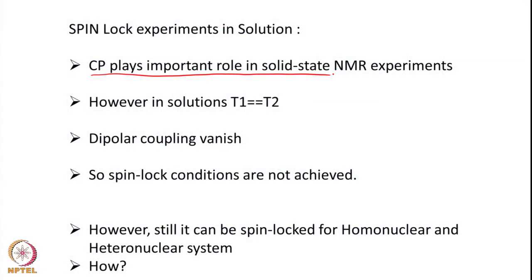Cross polarization plays an important role in solid-state NMR. Generally in solid-state NMR experiments, all experiments where we are detecting on carbon start with cross polarization — we transfer the magnetization from proton to carbon as the first step. But in liquid state, CP may not work because in liquid state T1 and T2 relaxation times are more or less equal, and the dipolar coupling effectively vanishes because spins tumble randomly and rapidly — direction and distance change all the time.